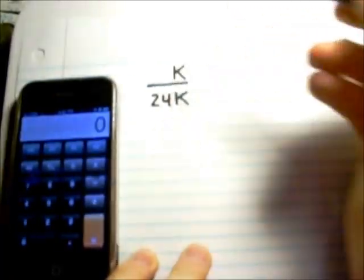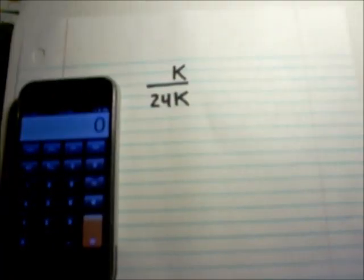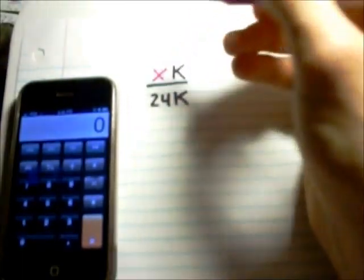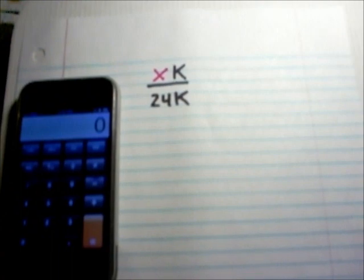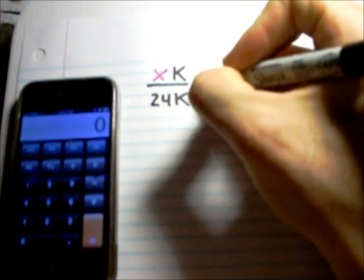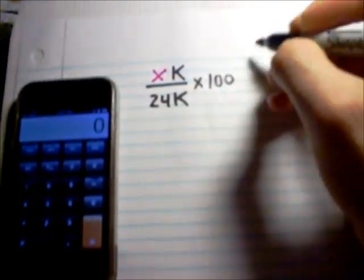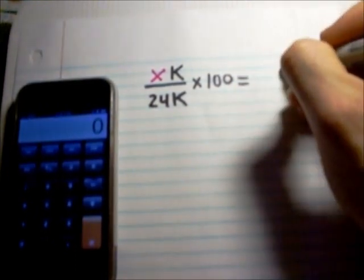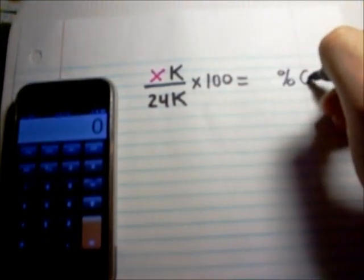So, you can make a fraction. 24 carats, that's the most you can have. So, what you're going to do is you're going to say however many carats you have in your jewelry, we'll say X carats, times 100 will equal your percent gold.